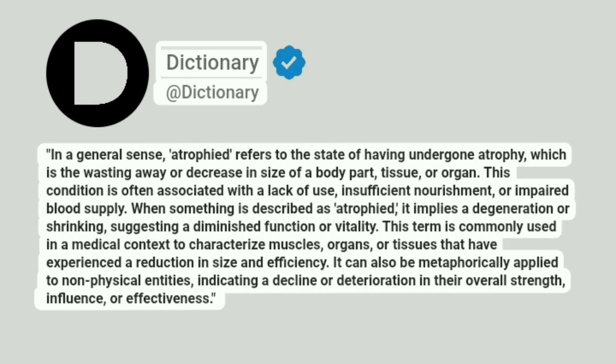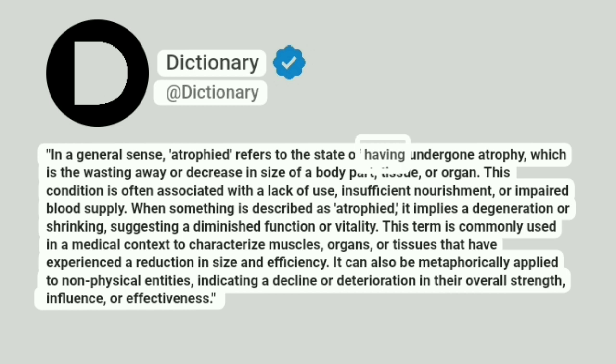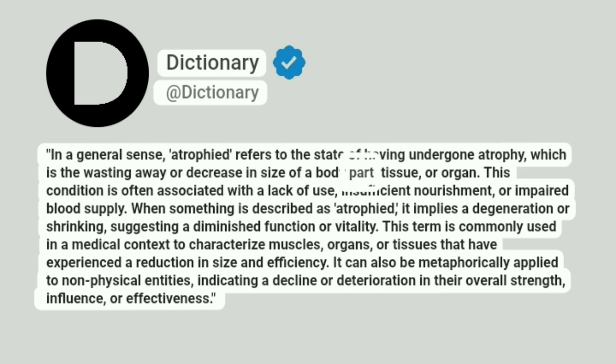Dictionary. Addictionary. In a general sense, atrophied refers to the state of having undergone atrophy, which is the wasting away or decrease in size of a body part, tissue, or organ.